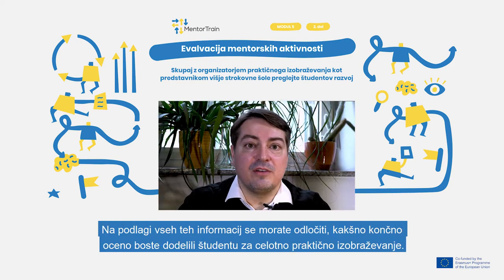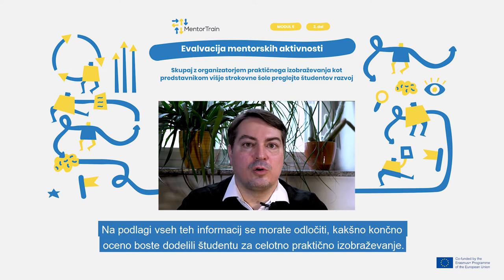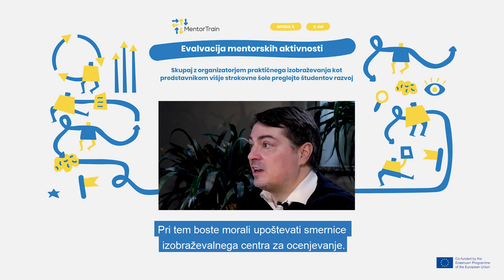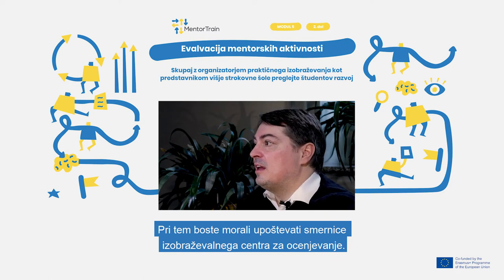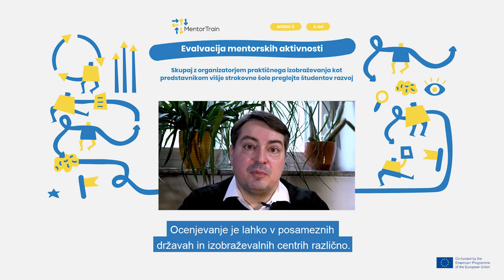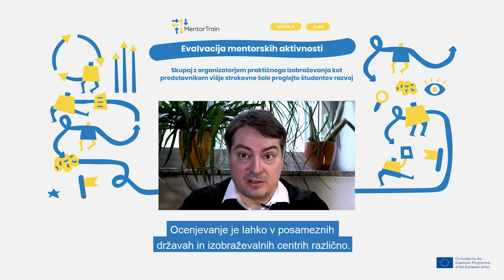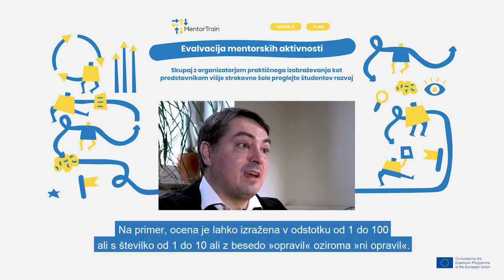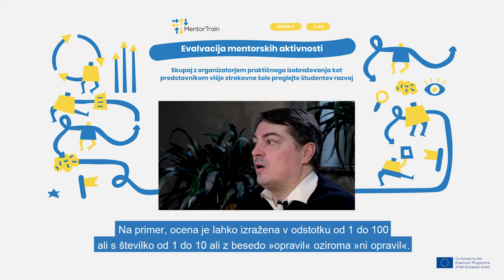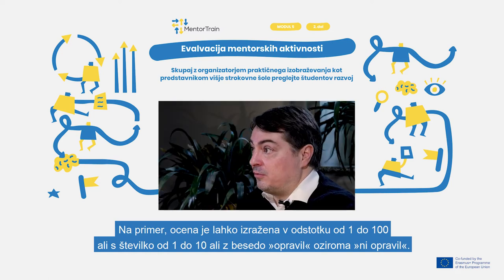Based on all this information, you should come to a conclusion on the final mark you will give the apprentice for the entire apprenticeship. Here you will have to follow the guidelines of the education center in terms of how the grading should be done. This can vary between countries and between education centers — for example, it can have the form of a percentage between 1 and 100, a mark between 1 and 10, or a simple pass or fail statement.